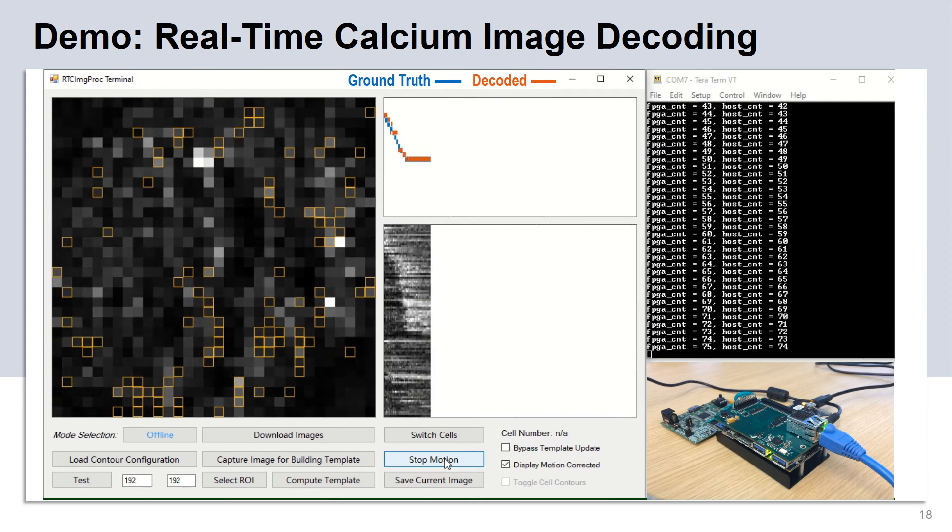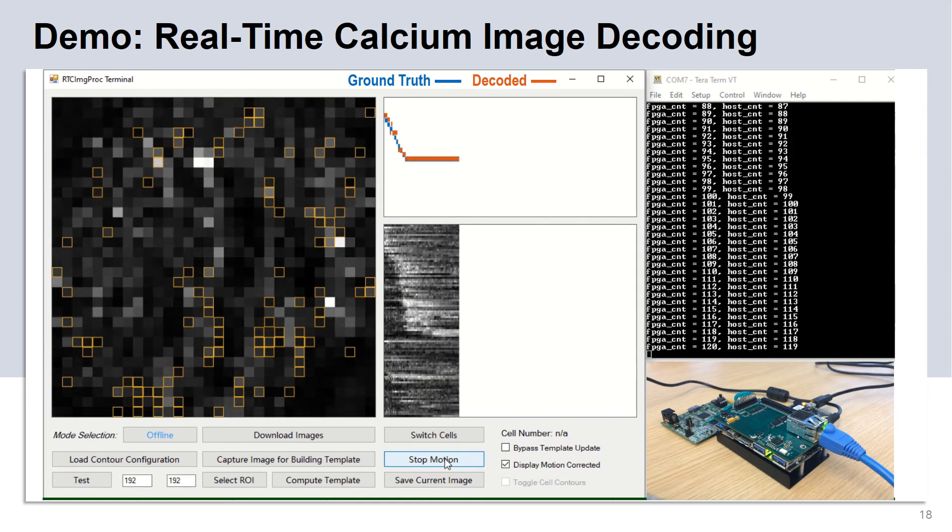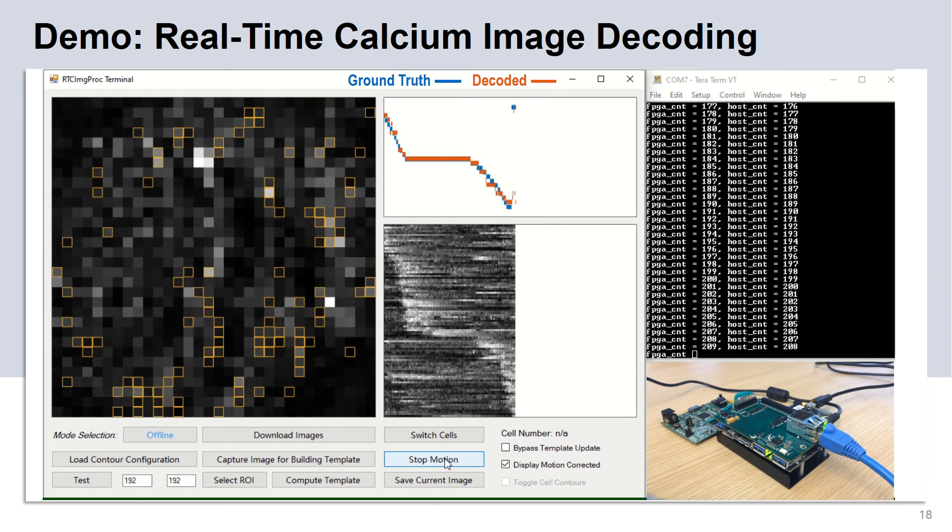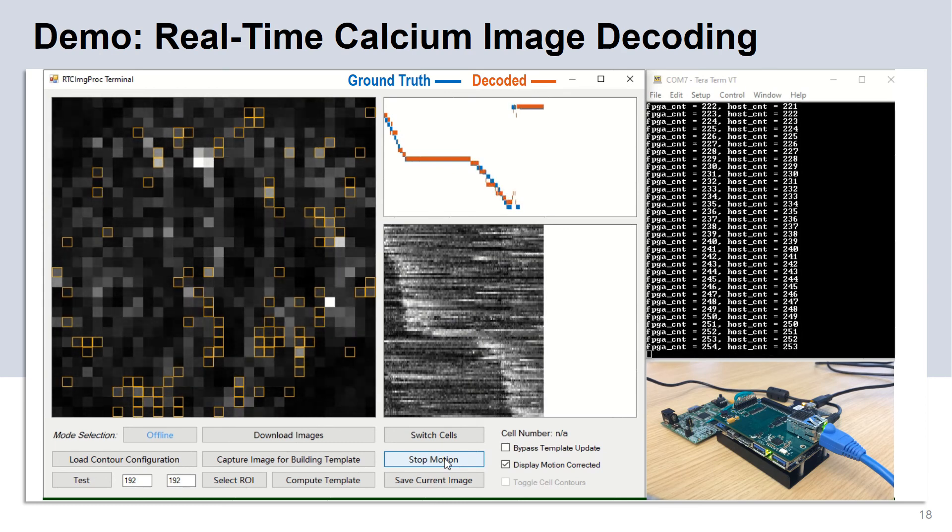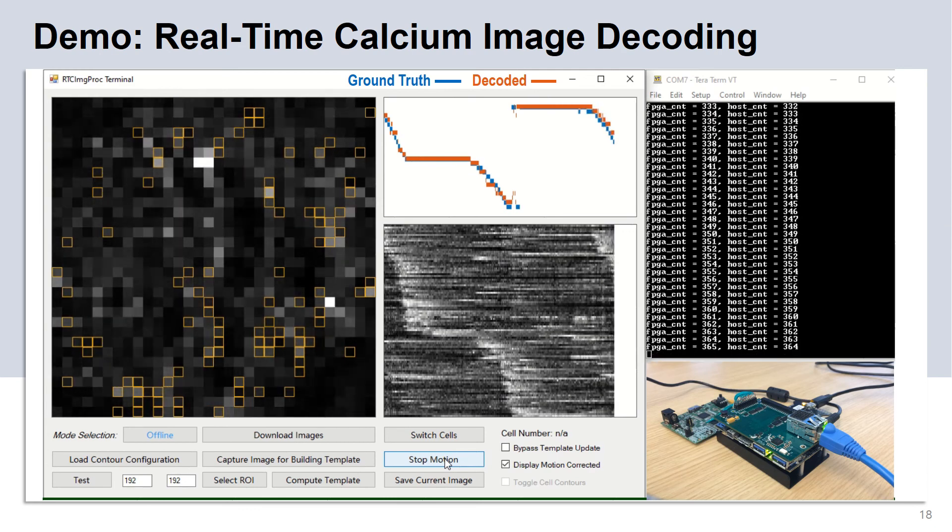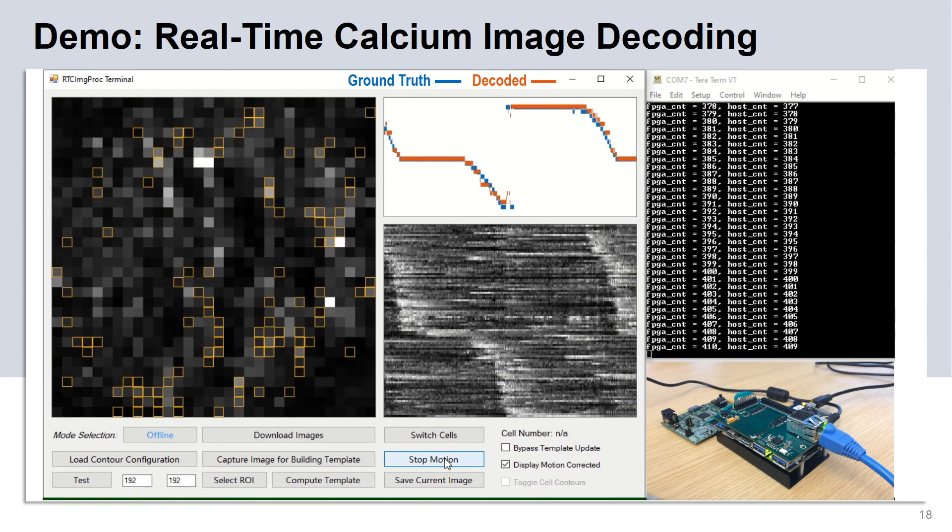Here we present a demo showing the real-time calcium image decoding we implemented on the Ultra96 FPGA. The blue curve shows the rat's real positions on the linear track, whereas the orange curve indicates the decoded positions in real-time.